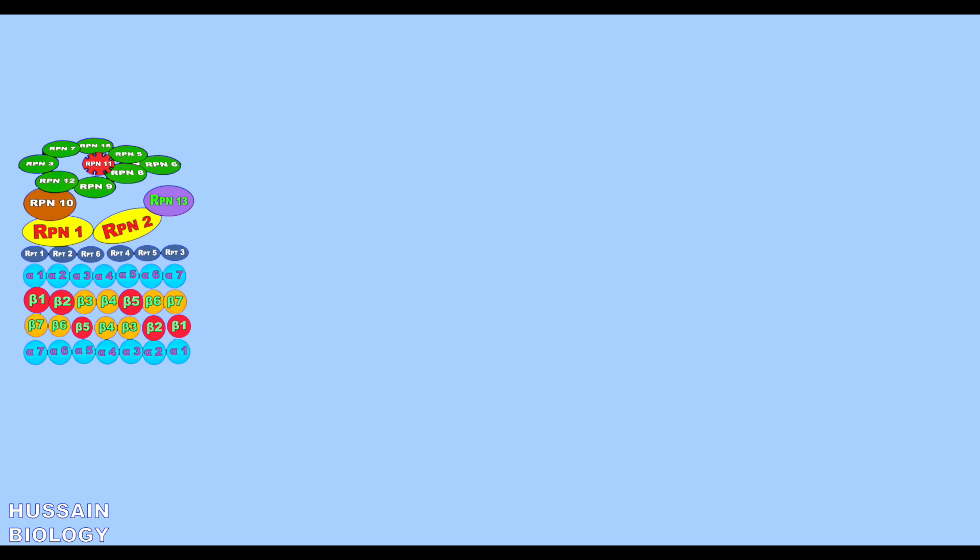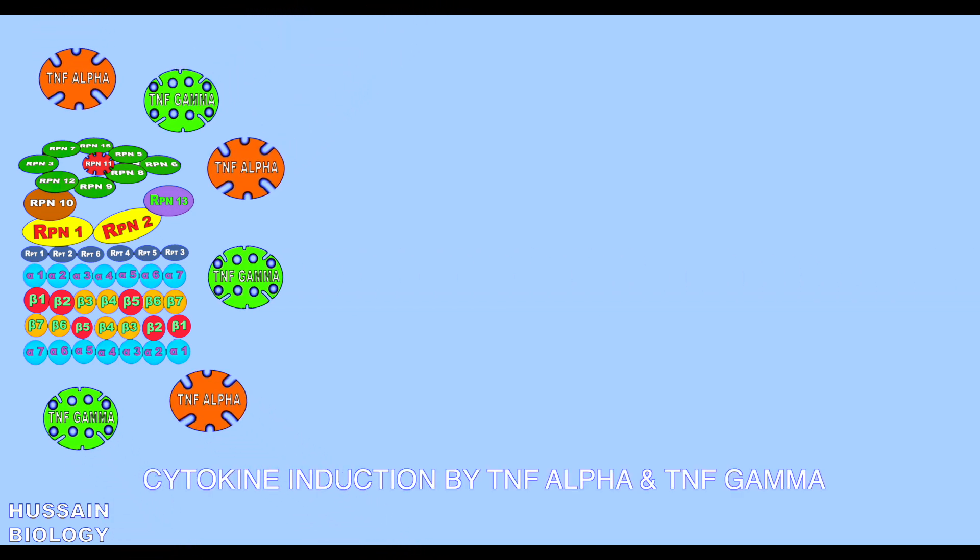So we have here the 26s proteosome. Now first of all, cytokine induction occurs. The cytokines which induce the formation are TNF alpha and TNF gamma.